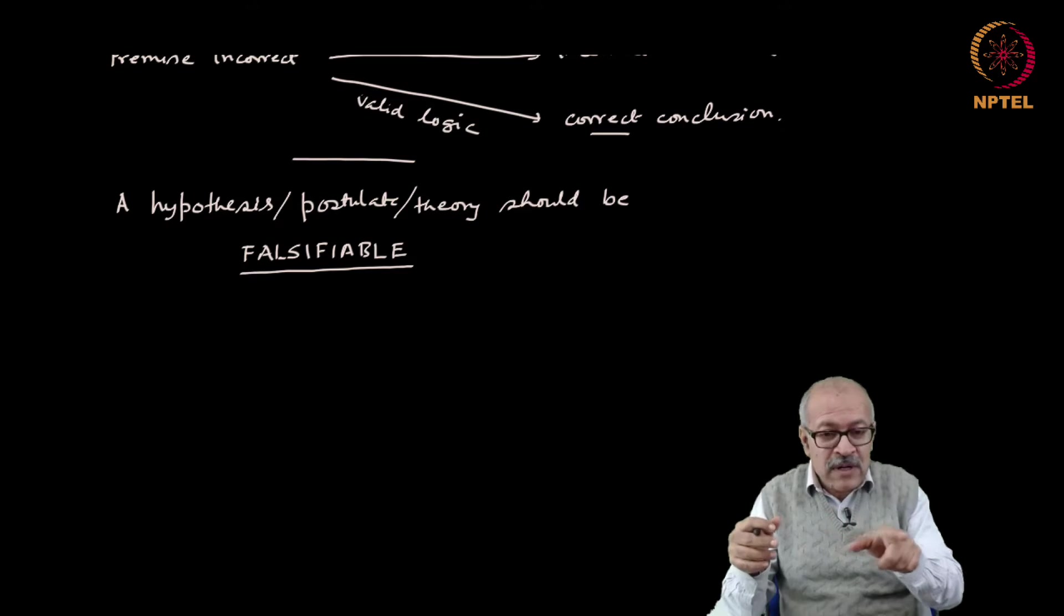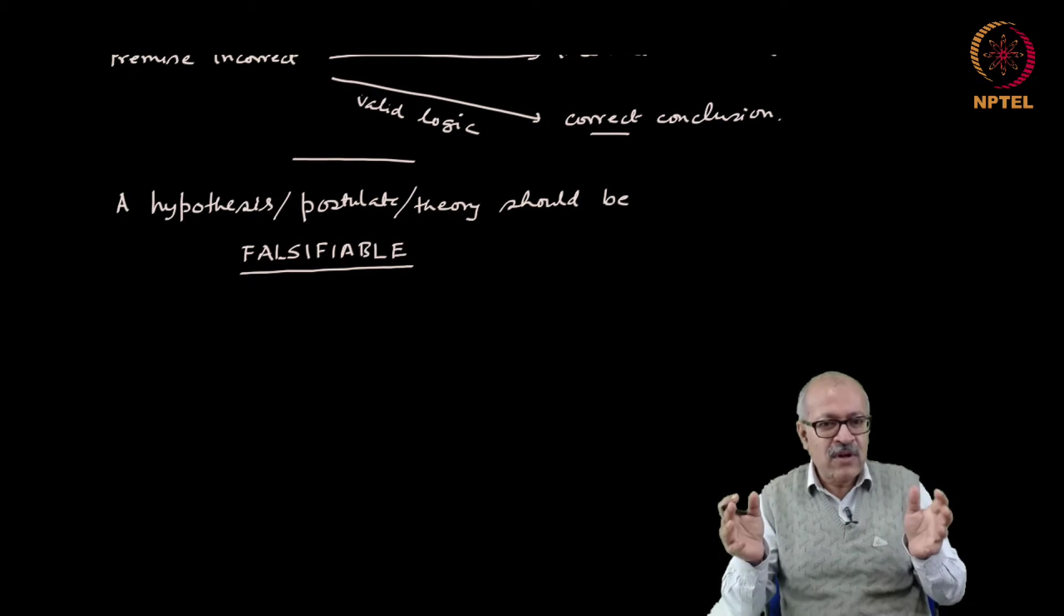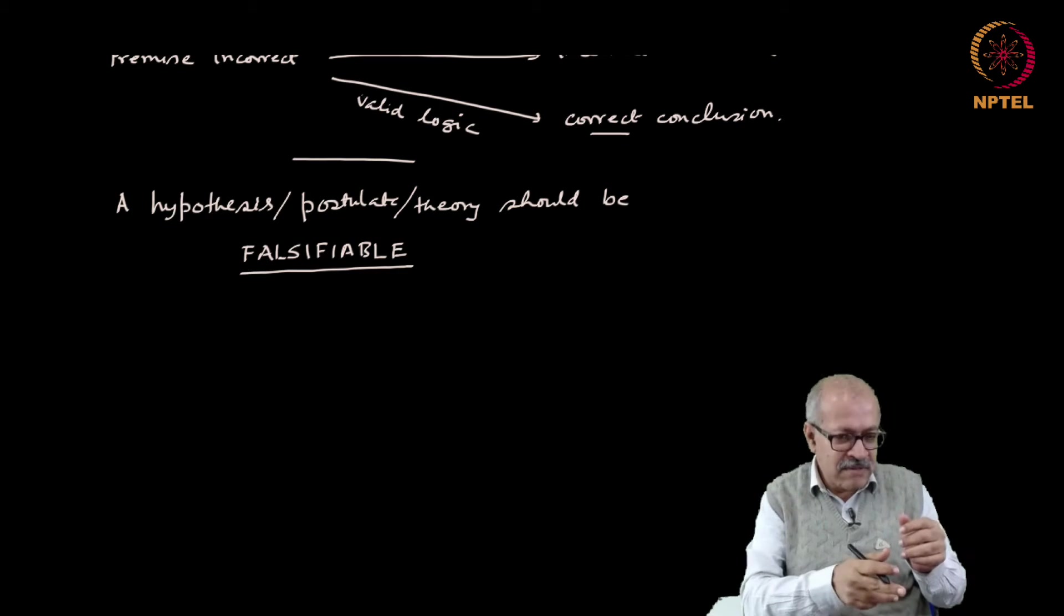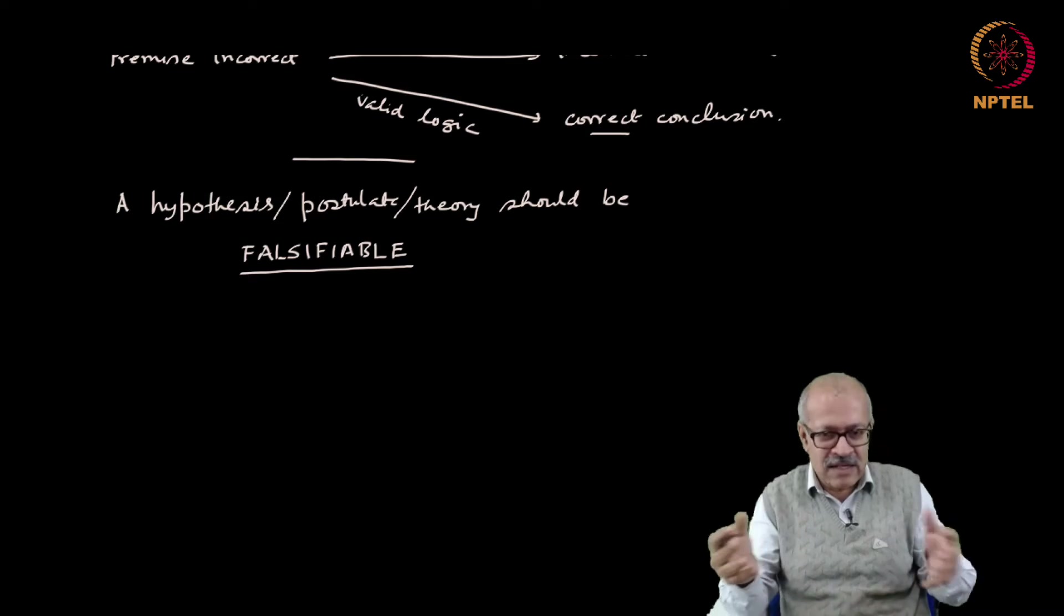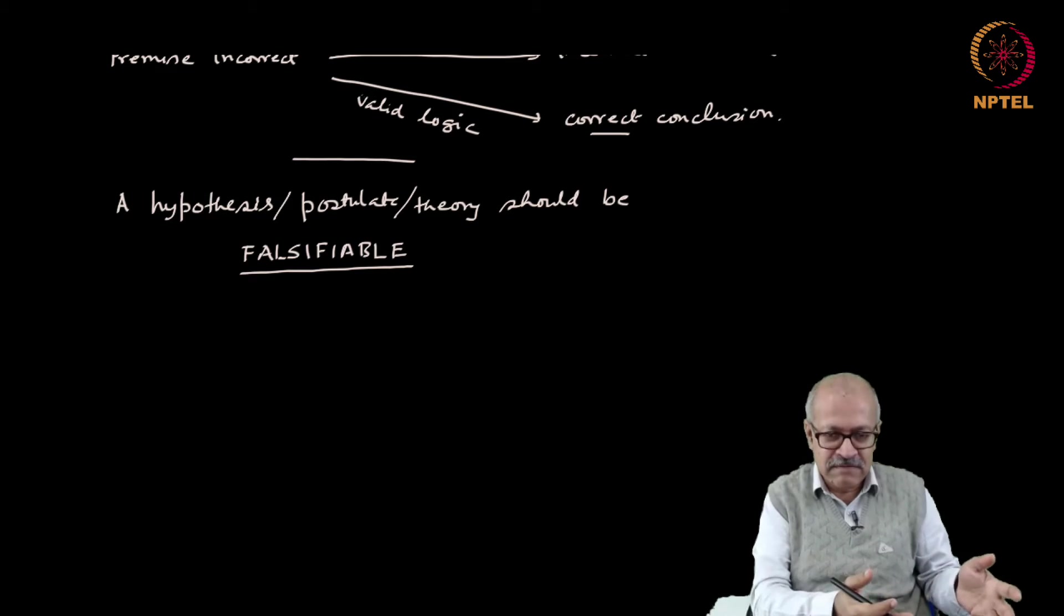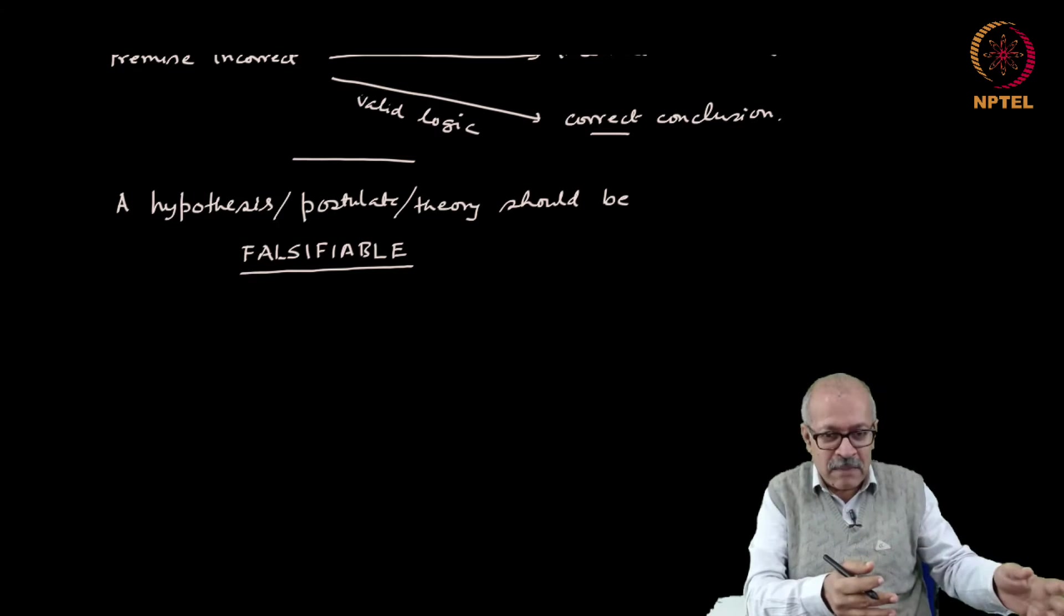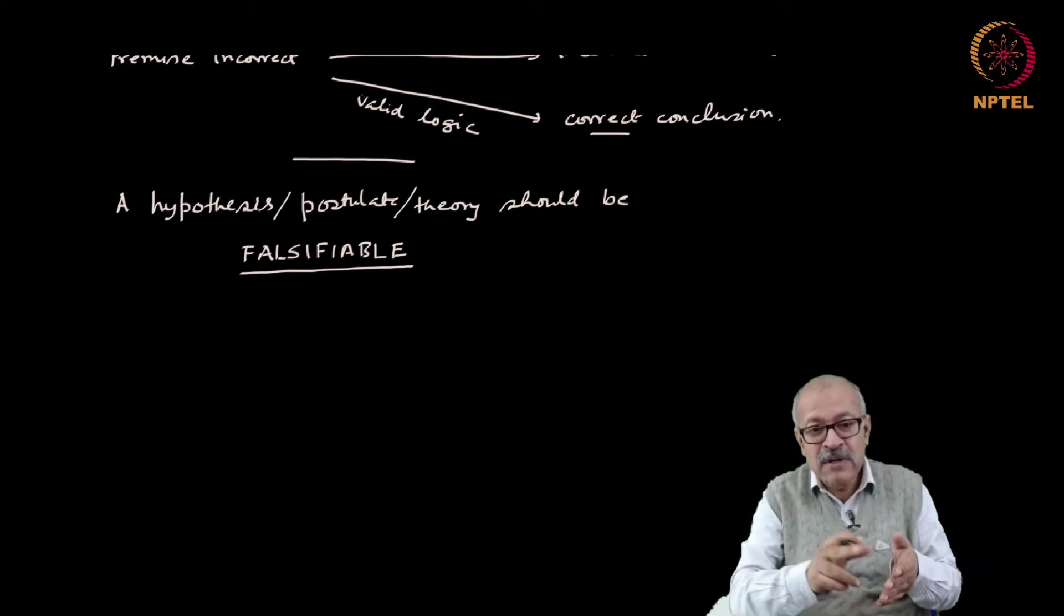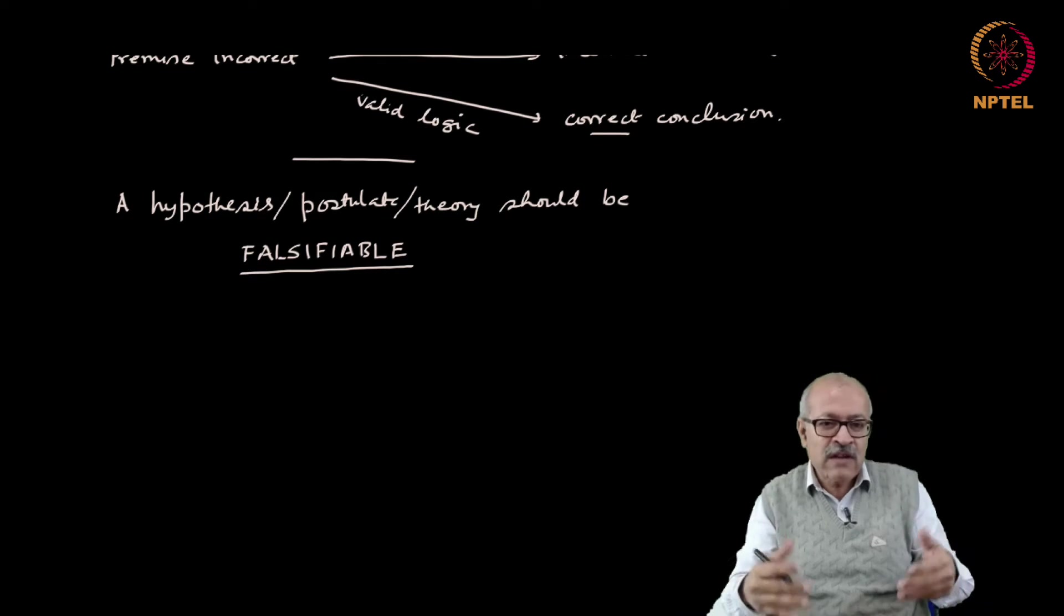What is the falsifiability criterion of this theory? It is easy to conceive that because if this theory was correct, it should be able to tell when this big bang happened, and they can say that around 15 billion years back. So 15 billion years back this big bang happened, and therefore one falsifiability criterion should be there should be no object in the universe which is older than 15 billion years.